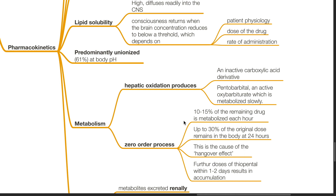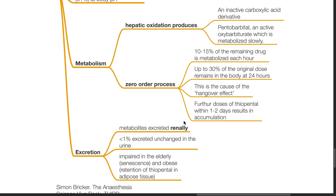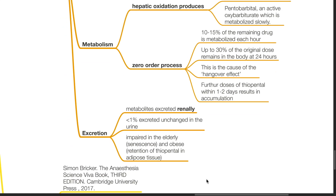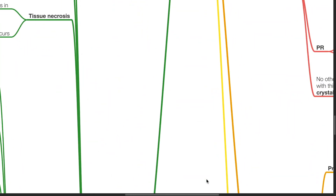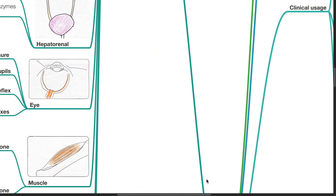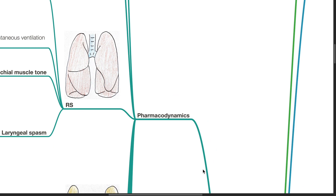Up to 30% of the original dose remains in the body at 24 hours. This causes the hangover effect, and further doses of thiopenthal within 1 to 2 days results in accumulation. The metabolites of thiopenthal are excreted renally, and less than 1% is excreted unchanged in the urine. Excretion is impaired in the elderly and the obese.